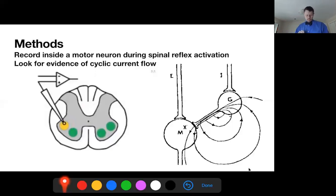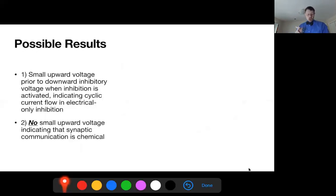What he set out to do was look for cyclic current flow. We're going to skip over the physics of the idea here, but we know already that when we stimulate our input, if we record from one of these motor neurons, we're going to see a big downward voltage, hyperpolarization—the neuron's going to become inhibited.